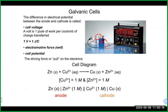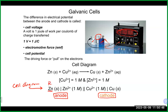A shorthand often used with galvanic cells is the cell diagram. It is always written with the anode first, followed by the cathode. The anode compartment shows a reactant separated from a product by one line. Two lines represent the salt bridge. Then comes the cathode compartment with its reactant and product. So the pattern is: reactant | product || reactant | product, going from anode to cathode.